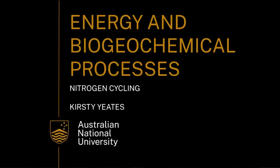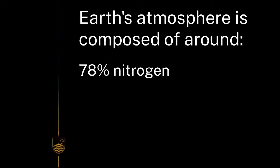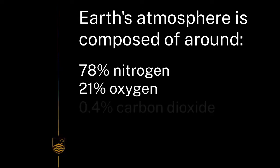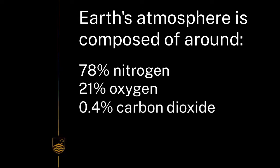One of those really important nutrients is nitrogen. In our atmosphere there's a really abundant supply of nitrogen — about three-quarters of our atmosphere is nitrogen, about a fifth is oxygen, a little tiny bit is carbon dioxide, and then we've got some other gases that make up the rest. Plants themselves can't actually access that nitrogen.